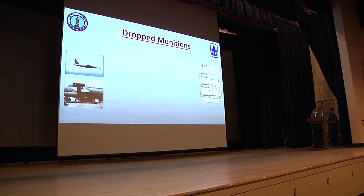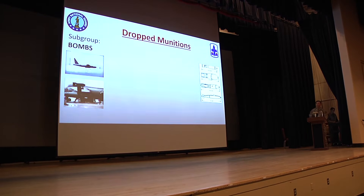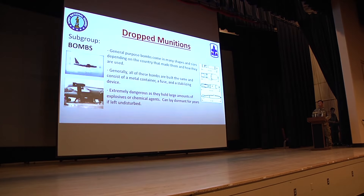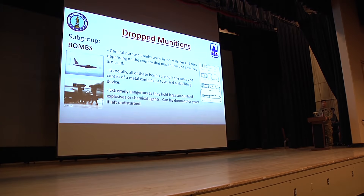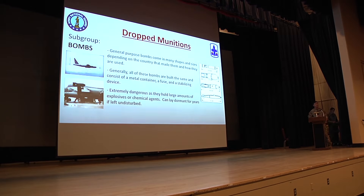Drop munitions. First, we're going to cover bombs. General purpose bombs come in many different shapes and sizes depending on the country that made them and how they were used. Generally, all these bombs are built the same and consist of a container, a fuze, and a stabilizing device.